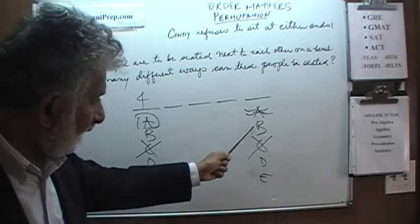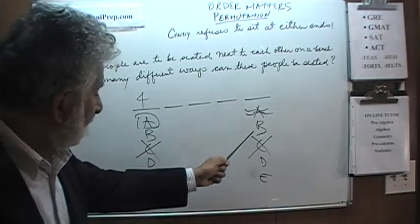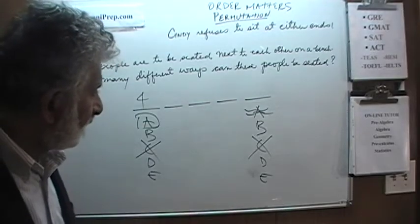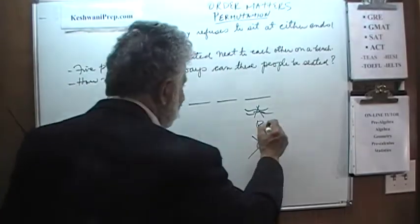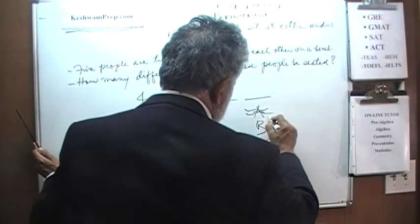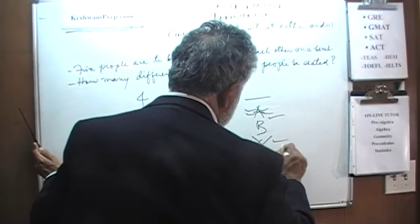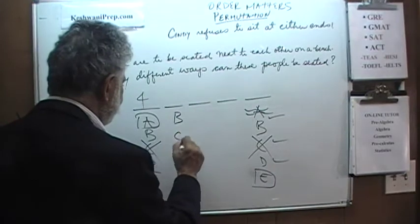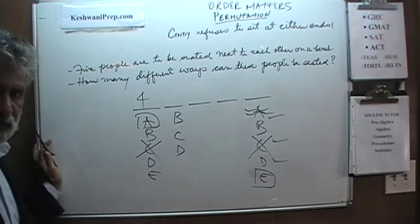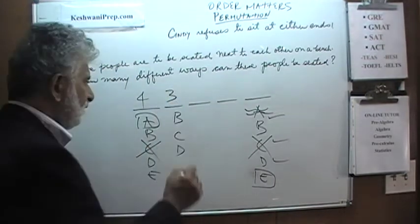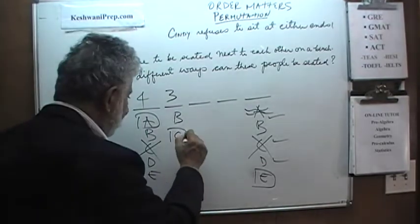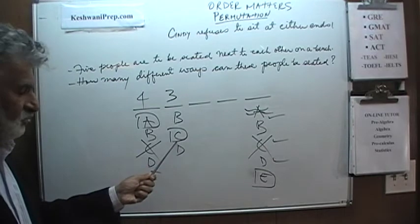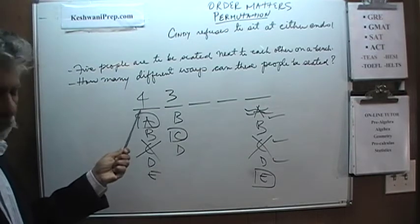So which means we still have—oh and let's pick one person who is going to sit here on this end. Again makes no difference. I am going to make E sit here. So which means we still have B, C and D. Pick one person which means there are three different ways we can fill up this spot. I am going to make Cindy sit here. She is fine sitting here, she just doesn't want to sit at the end.